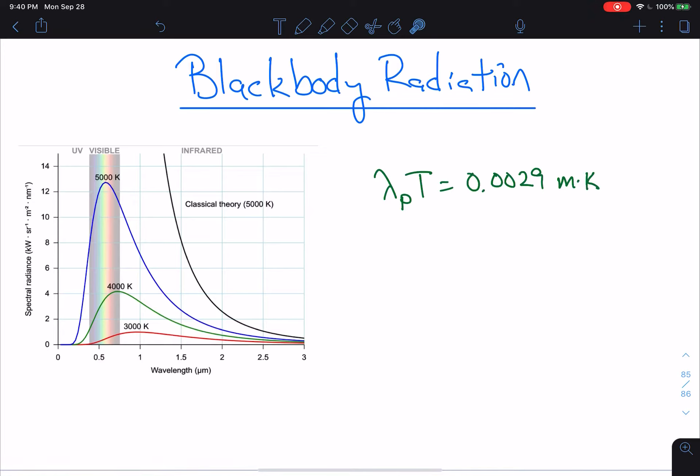And then on this one, the 4,000 K, there's a peak here, 3,000 K, there's a peak here. But the point is there's some peak that corresponds to wavelength. And that's what this is.